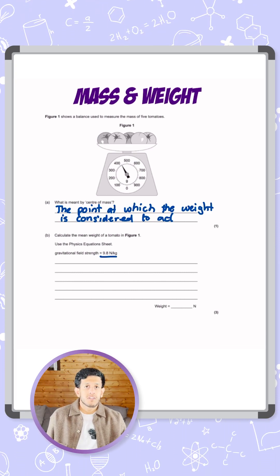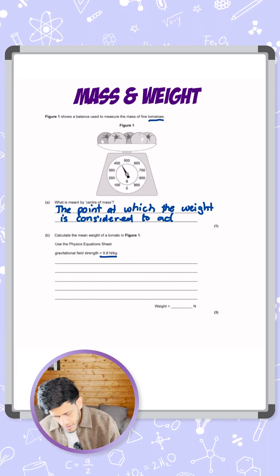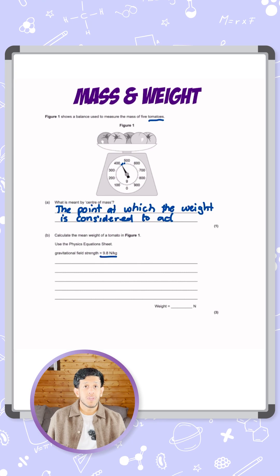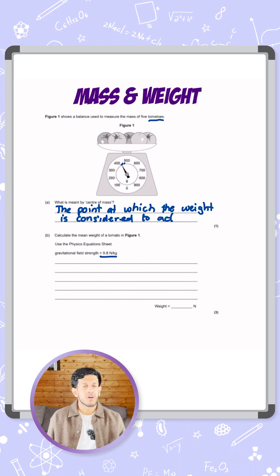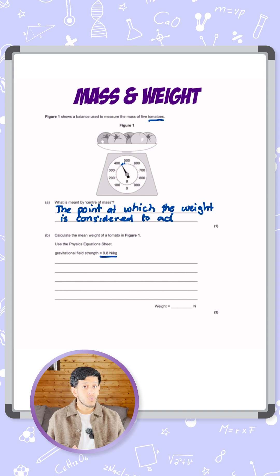Here it's asking us to measure the mass of one tomato, but we've got the mass of five tomatoes in the diagram. Between each of the hundred gram lines there are four divisions, so that means 100 divided by 4 - each division is 25 grams.